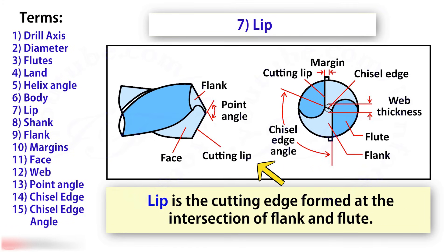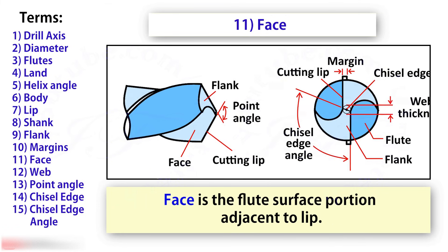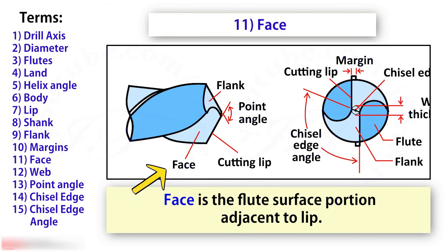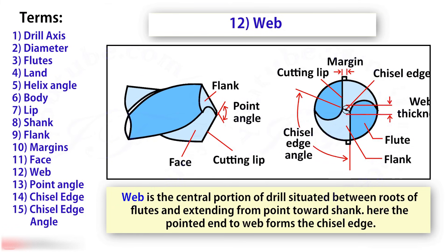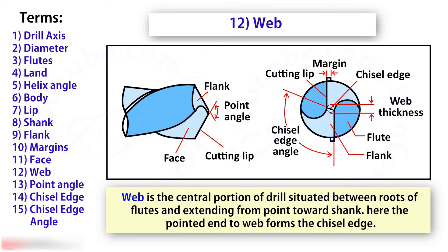Lip is the cutting edge formed at the intersection of the flank and the flute. Face is the flute surface portion adjacent to the lip. Web is the central portion of the drill situated between the roots of the flutes, extending from the point towards the shank. The point end of the web forms the chisel edge.